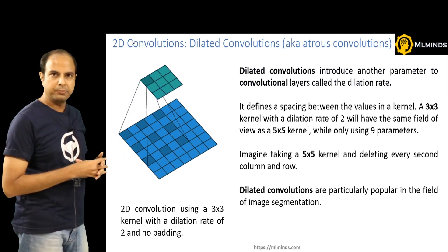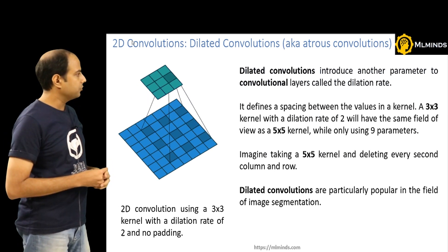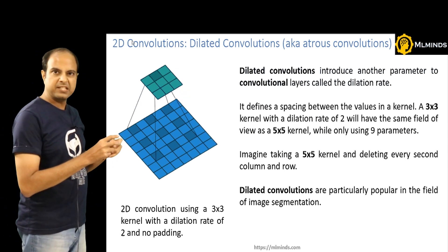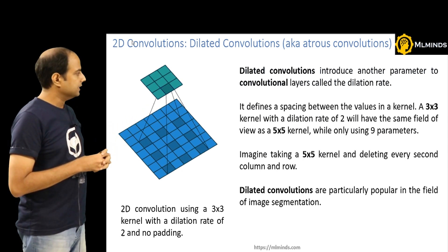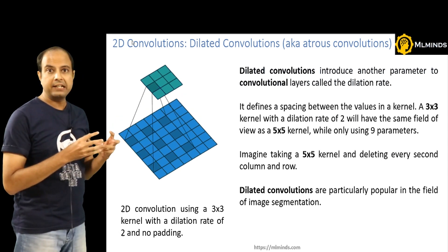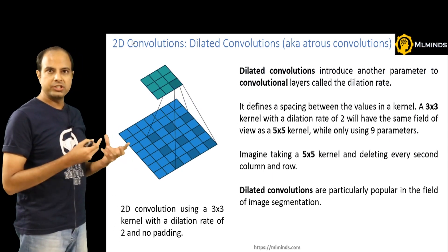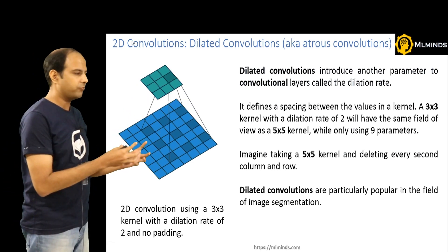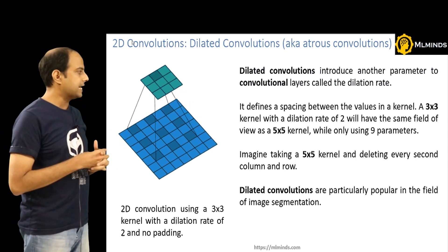In this case, the input is a 7×7 image and we still have a 3×3 filter. But there is a gap or spacing between the values in the kernel — that's the dilation rate. A 3×3 kernel with a dilation rate of 2 has the same field of view as a 5×5 kernel. The patch it looks at in the original image is a 5×5 patch — it's like taking a 5×5 kernel and deleting every second row and column.